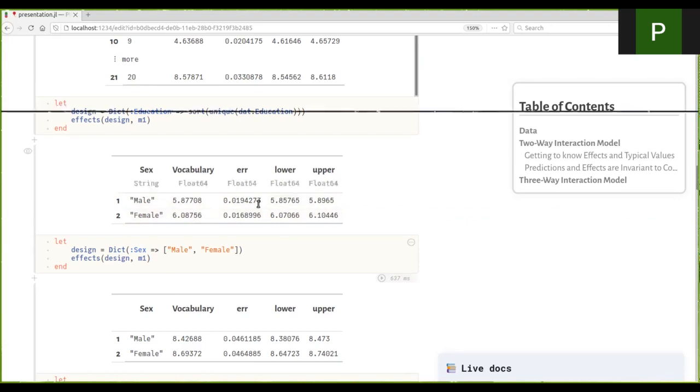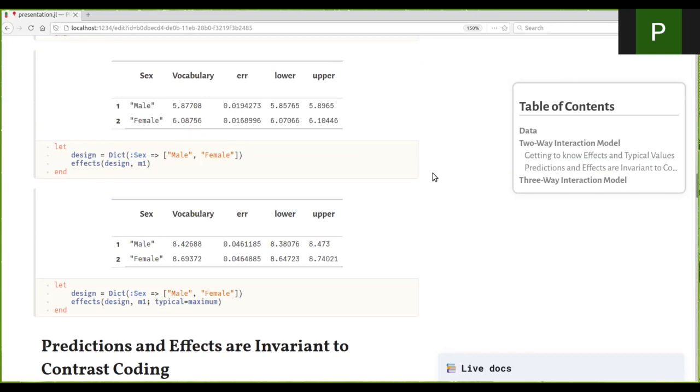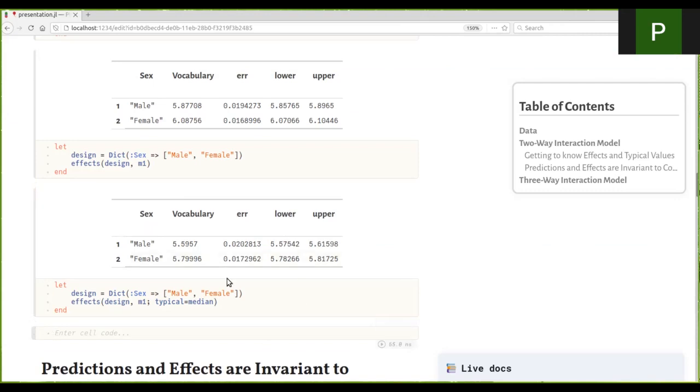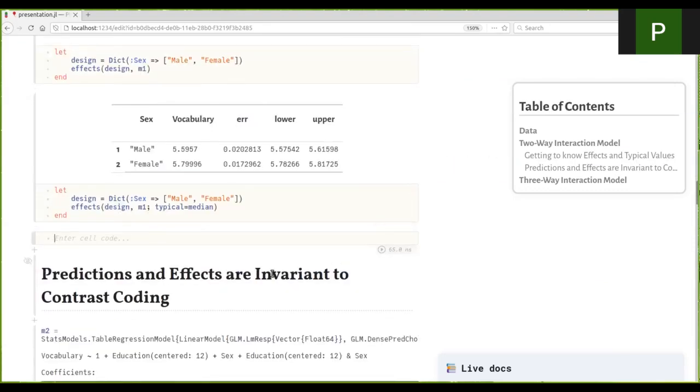We can also look at other typical values. For example, we can look at maximum as a typical value, and now these data represent performance at the maximum of education. We can look at perhaps more meaningfully median, which is in many ways also a valid typical value. When we do this, we see that even at the median value of education, females slightly outperform males on this vocabulary test over time.